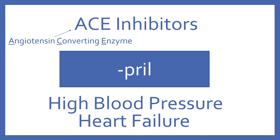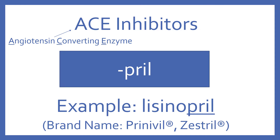ACE inhibitors end with the suffix -pril, and they are for high blood pressure and heart failure. ACE stands for angiotensin converting enzyme. An example of an ACE inhibitor is lisinopril — you can see the -pril ending — and its brand name is Prinivil or Zestril.